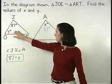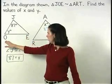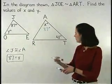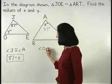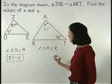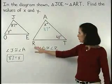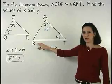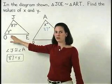To find the value of Y, we know that the corresponding angles O and R are congruent. The problem is we don't know the measure of angle R, and we need to know the measure of angle R in order to find the value of Y.